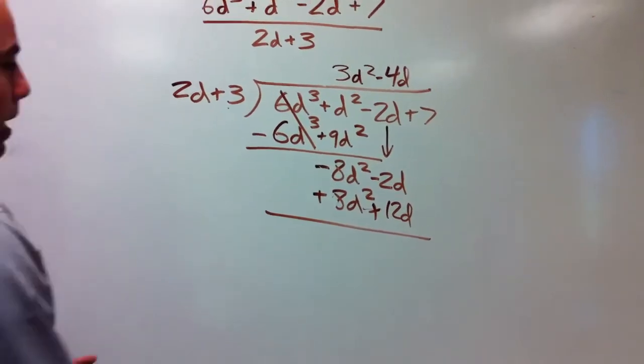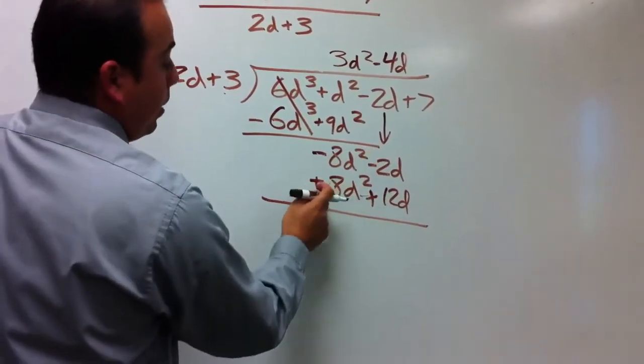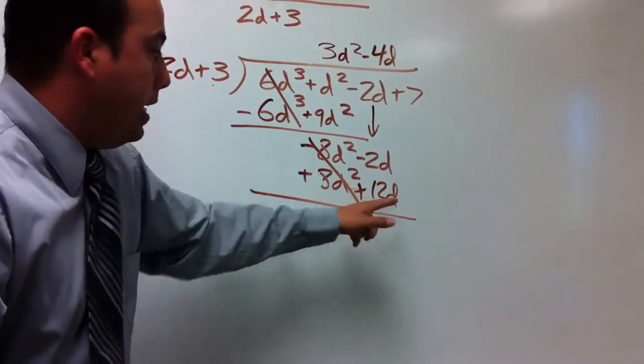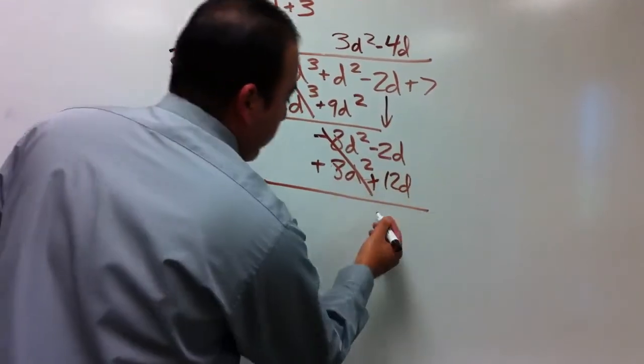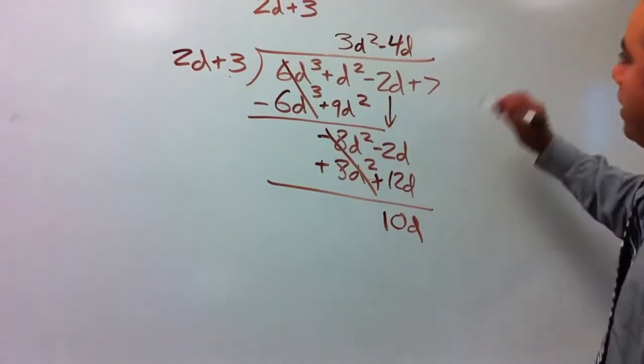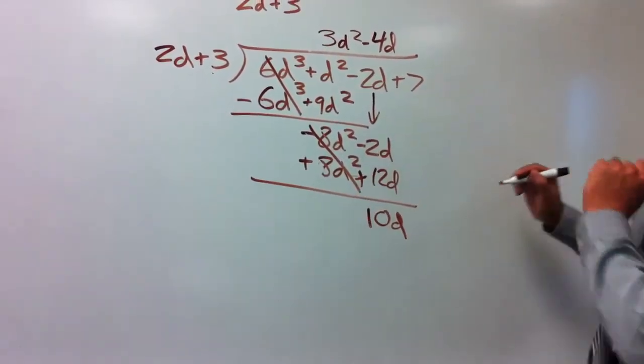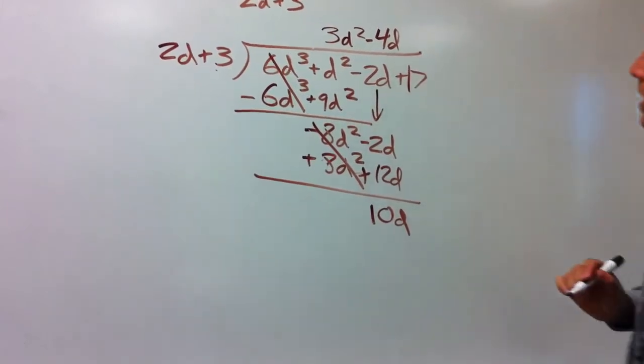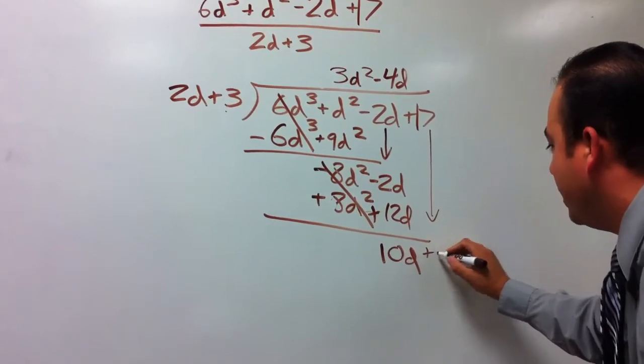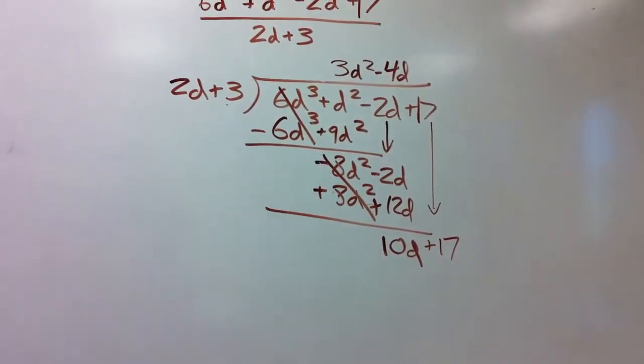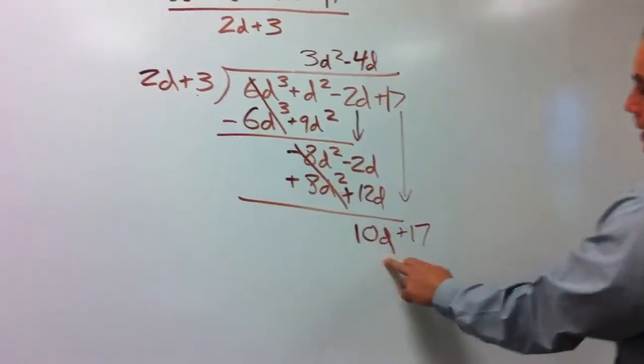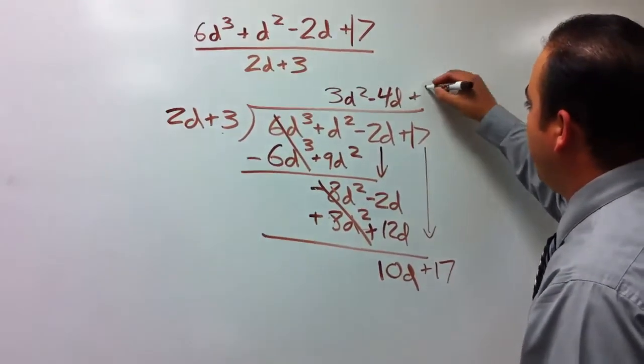Now we have -8d² plus 8d², which cancels out. Then we have 12d minus 2d, or -2d plus 12d, which gives me 10d. I'm going to bring down the last part. Oh, by the way, sorry, mistake—this is a 17. So now we're just getting to that part. Bring down a 17, so we got positive 17. We still want to get rid of this 10d. So how many times does 2d go into 10d? That's going to be 5, so a positive 5.